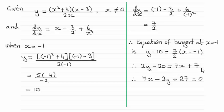And then just rearranging this by adding 20 and subtracting 2y from both sides gives us the answer that I've got here. 7x then minus 2y plus 27 equals 0. OK?